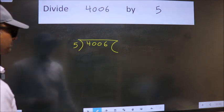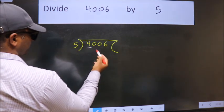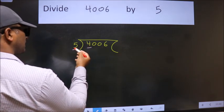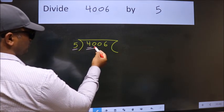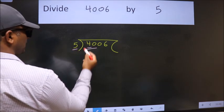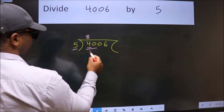Next, here we have 4 and here 5. 4 is smaller than 5, so we should take two numbers: 40. When do we get 40 in the 5 table? 5 times 8 is 40.